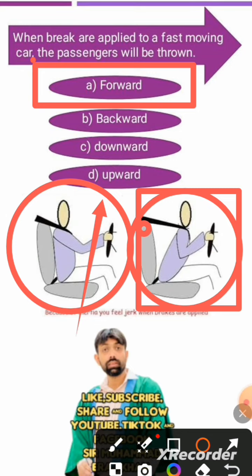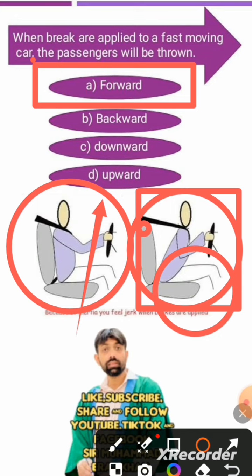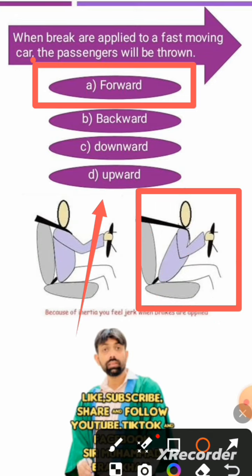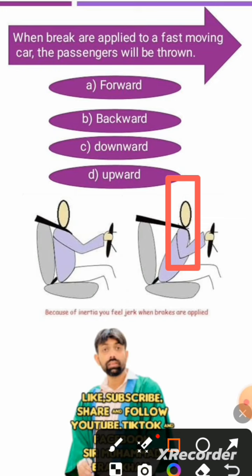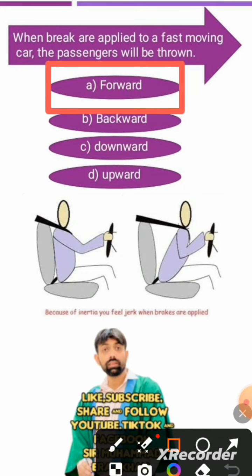If you hit the brake, the body will not come to rest immediately. The body will continue to move in the forward direction. So the right answer is: when a brake is applied to a fast-moving car, the person will turn and move forward.